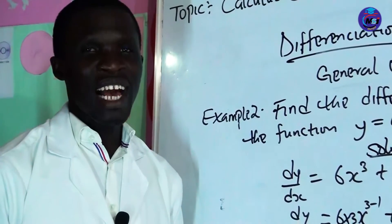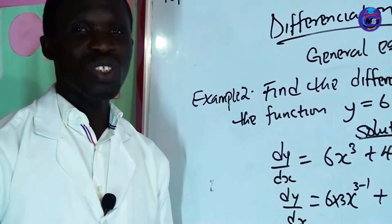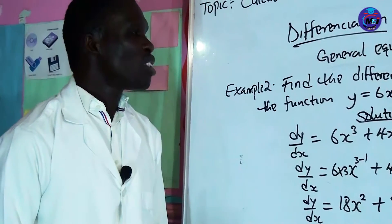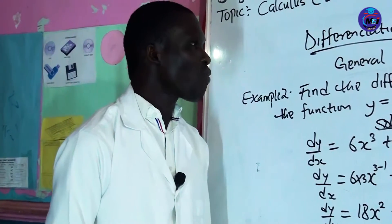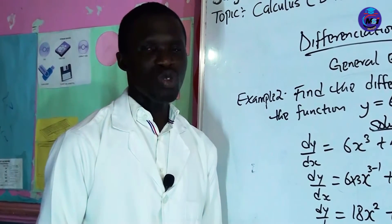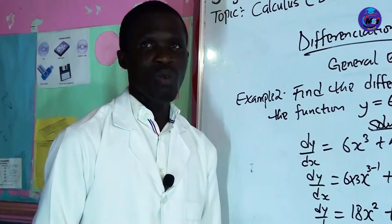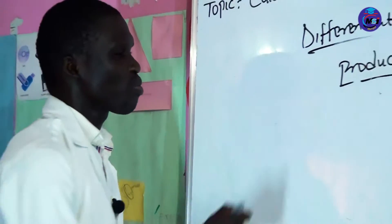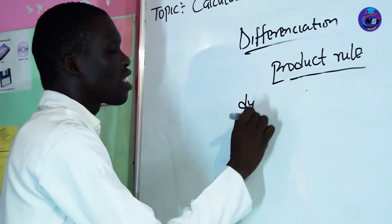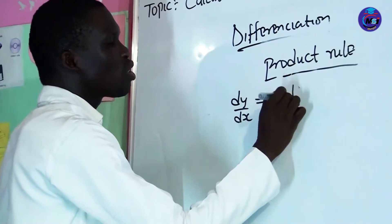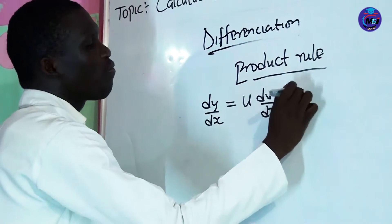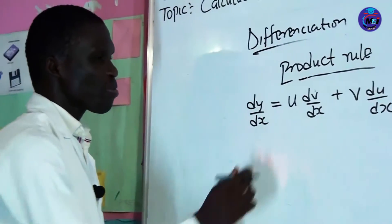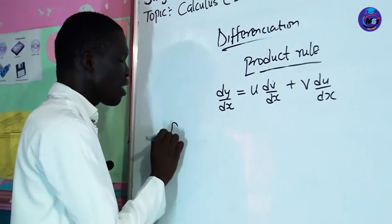I believe you are following this class. Don't worry — if you watch this video all over again you will understand this topic. Now let me go to the second method of finding differentiation, which is product rule. The formula for product rule is: dy/dx equals u times dv/dx, plus v times du/dx. This is u and this is v.